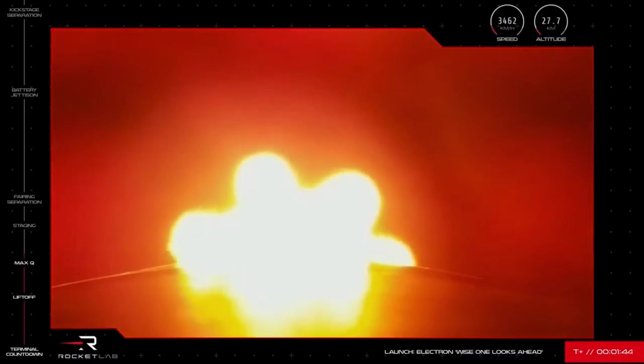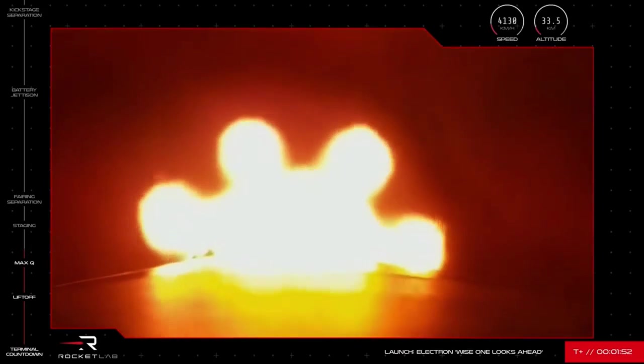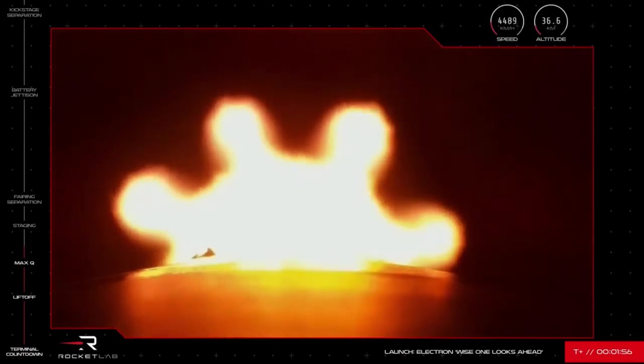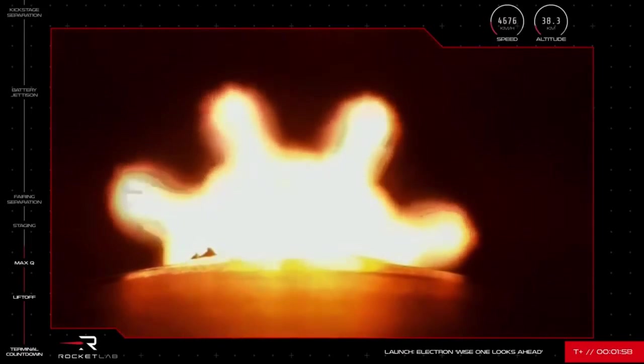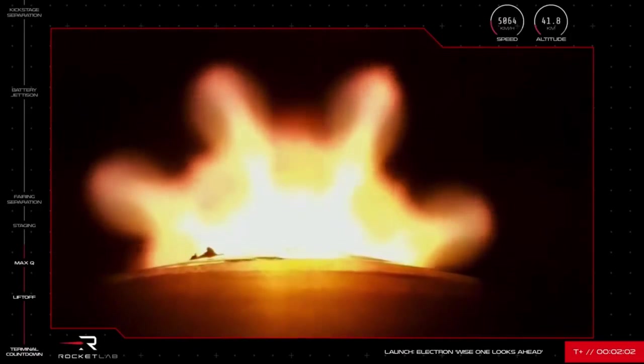MECO allows the vehicle to decelerate slightly before the first stage separates from the second stage. As the first stage falls back to Earth, the single space-optimized Rutherford engine on the second stage ignites to take the vehicle with payload the rest of the way into space. You'll see both events on screen and we should hear Mission Control confirm from vehicle telemetry.